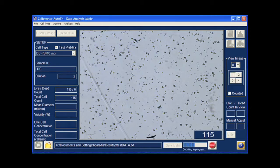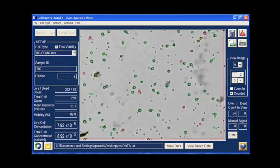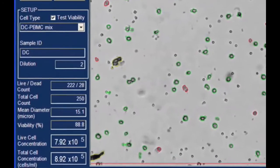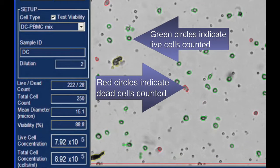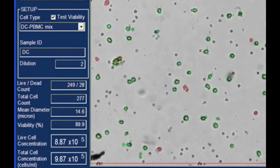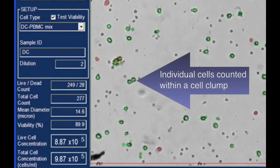The T4 counts all the cells in the brightfield images to determine total cell number. The brightfield counted image indicates individual cells counted. Users have the option to count cell clumps or count individual cells within clumps.